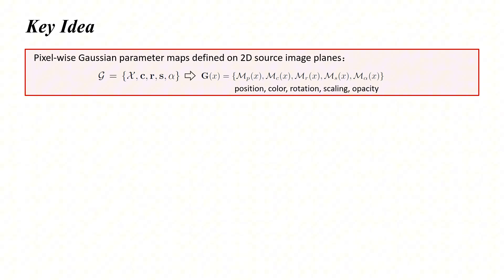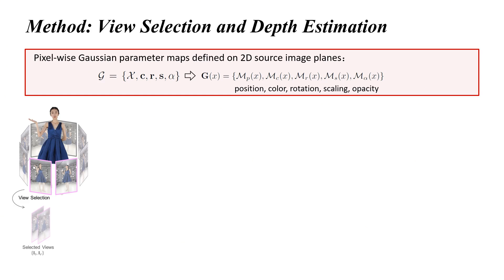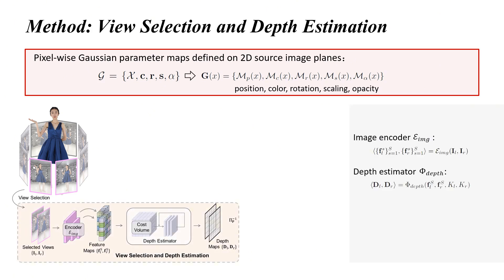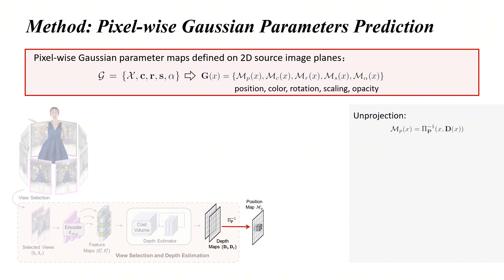The key insight of GPS Gaussian is to define pixel-wise Gaussian parameter maps on 2D source image planes. These maps enable a feedforward regression of 3D human representation via efficient 2D convolution networks. Given a target novel viewpoint, we first select the two neighboring source views on which to formulate our Gaussian maps. Then we extract the image features using a shared image encoder, followed by conducting a binocular depth estimation. The depth map is the key component of our framework, with which a pixel located at 2D image planes can be immediately unprojected to 3D space. Therefore, the depth map works as a learnable unprojection, bridges 2D feature space and 3D Gaussian representation.